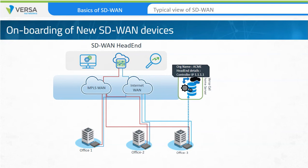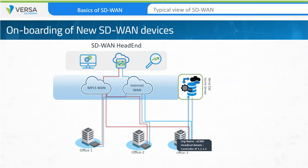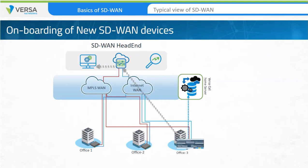Once the device receives its pre-staging information, it contacts the head-end components specific to that device. After authentication to the head-end components, the manager provides the configuration needed to participate in the network. Once the configuration becomes active, the branch device gains access to the control network, where it receives the routing and forwarding information it needs to reach other corporate sites.